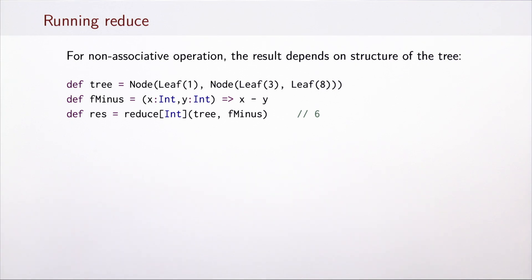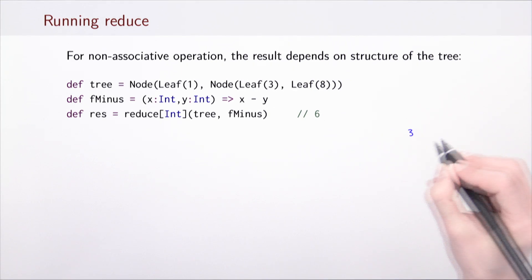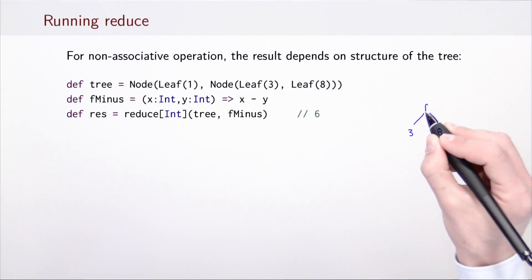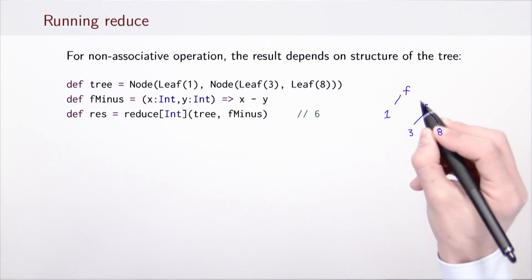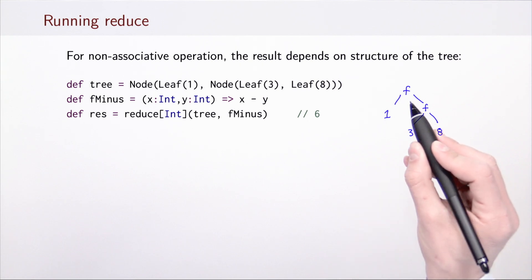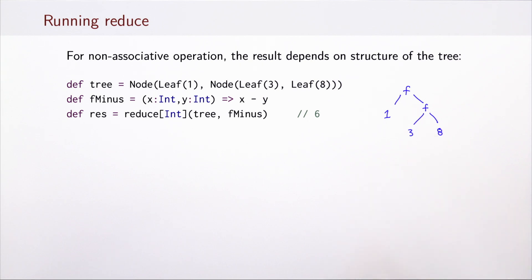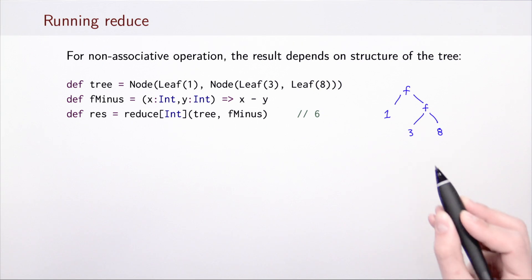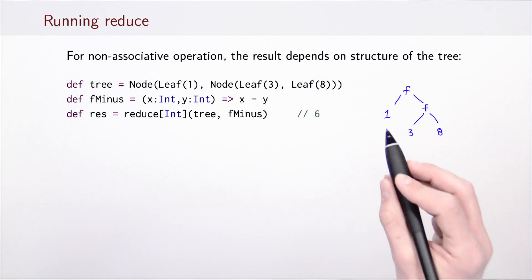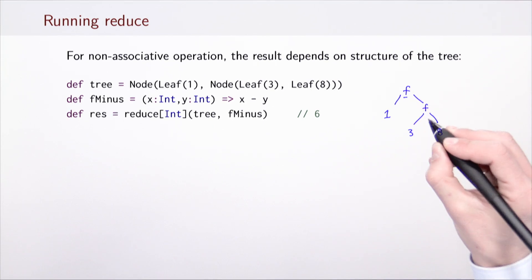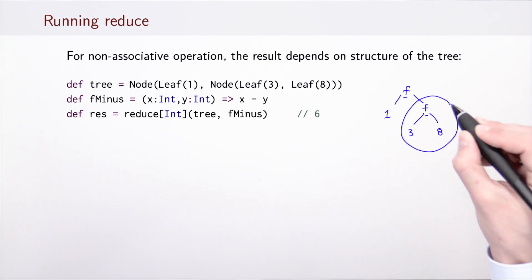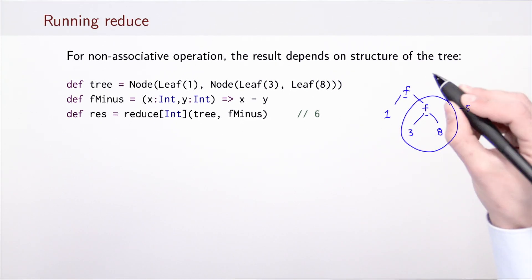Running reduce on an example tree: the tree has 3 and 8 combined into one node, and then 1 is combined with them. Reduce places the given operation f into the nodes. Using subtraction — which is not associative — but given a fixed tree structure, the result is uniquely determined: 3 minus 8 is minus 5, and then 1 minus (minus 5) gives 6.